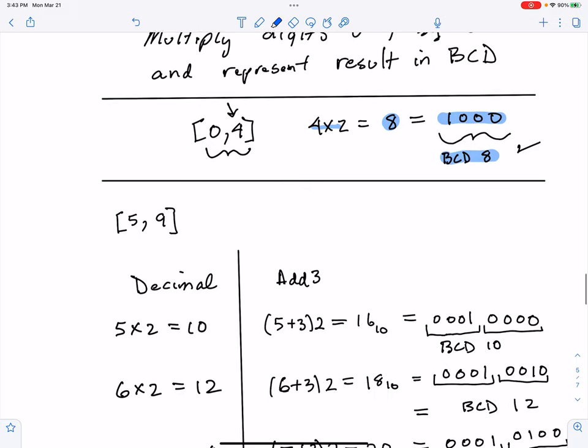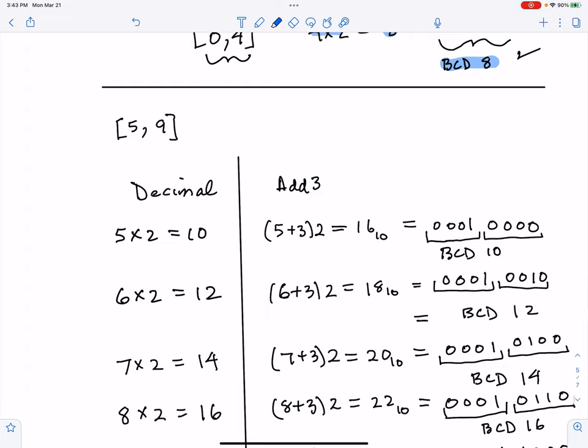Next, let's talk about the range 5 through 9. And what I'm trying to do is I want to take that number, double it, and then represent that answer, that decimal answer in BCD. So let's get started. 5 times 2 in decimal, that's 10.